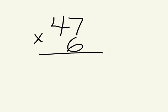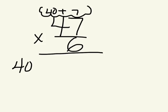47 times 6 really means 40 times 6 and 7 times 6, because 40 plus 7 is 47. So 40 times 6 and 7 times 6.